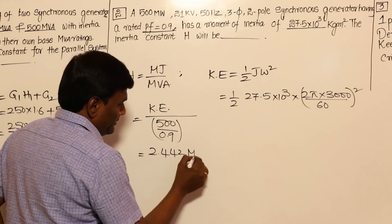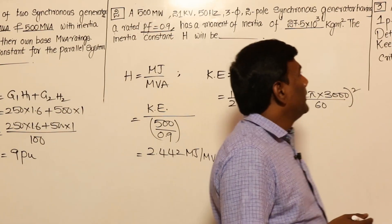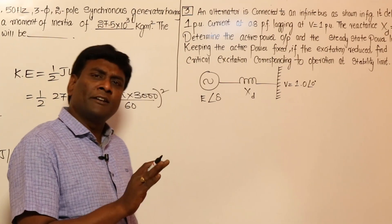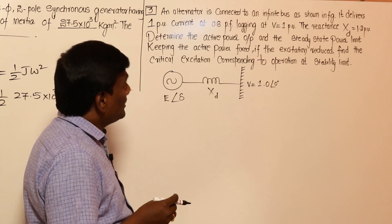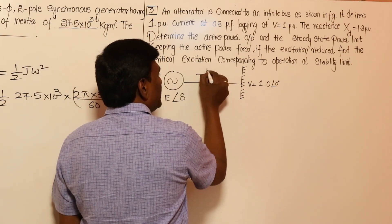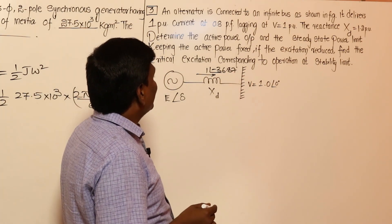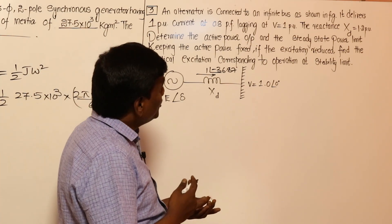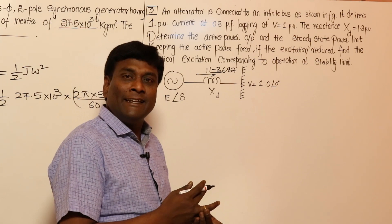The answer is 2.442 MJ per MVA. Now let us think of one more problem — a synchronous machine or alternator problem. An alternator is connected to an infinite bus. It delivers 1 per unit current at 0.8 power factor lagging at V = 1 per unit. The reactance X_D = 1.2 per unit. Determine the active power output, the steady state power limit, and — keeping active power fixed — if excitation is reduced, find the critical excitation corresponding to operation at the steady state limit.